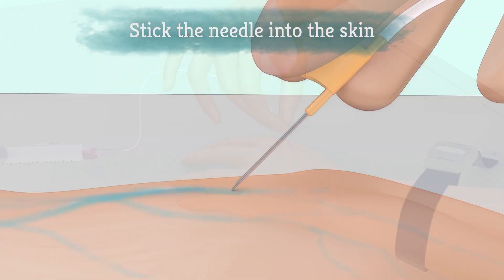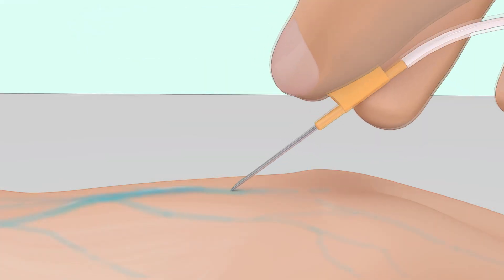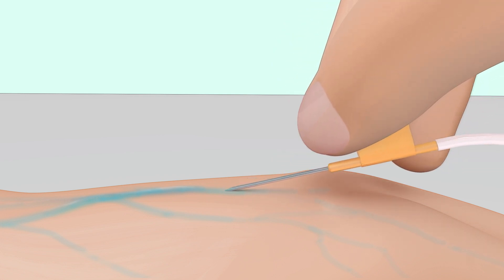With a confident push, stick the needle into the skin at about a 45 degree angle. The needle should point toward your heart as it enters and follow the direction of the vein under the skin.